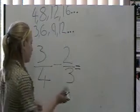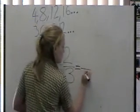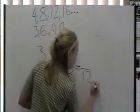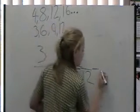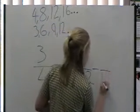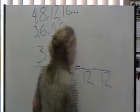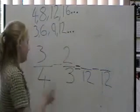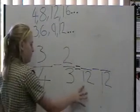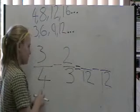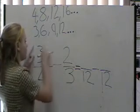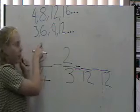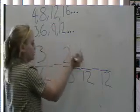So we have 3 quarters becoming something on 12, take away 2 thirds becoming something on 12. So whatever we do to the denominator, we'll have to do the same to the numerator. So what do we do to the 4 to make it a 12? We times it by 3. So we have to do the same to the 3. So 3 times 3 is 9.